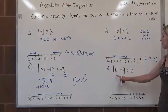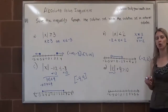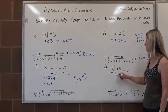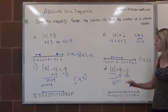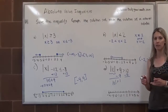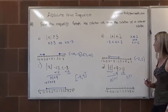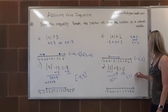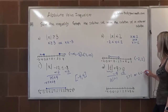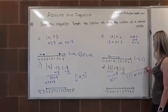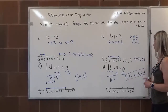Last but not least, letter D: we have the absolute value of T plus 9 is greater than 10. The absolute value is not isolated — it is being added to 9 — so we subtract 9 from both sides. That gives us the absolute value of T is greater than 1. We're looking for numbers further away from 0 than 1 on the number line, so there are two distinct intervals: T is greater than 1, or T is less than negative 1. You cannot combine these into one compound inequality — that's mathematically unsound — so we leave them separated with the word 'or.'